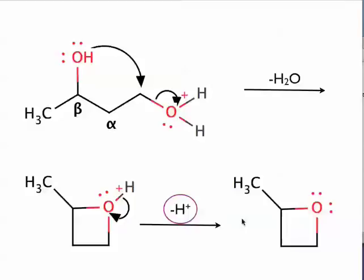So this proton has now been liberated at the very end of this, such that it can now go on and start this whole chain of events again for another equivalent of the diol to give 2-methyloxetane.